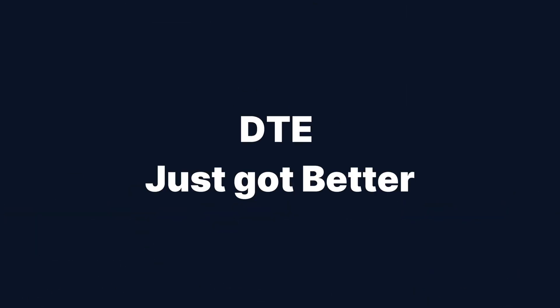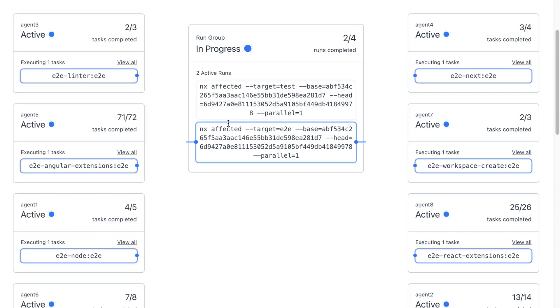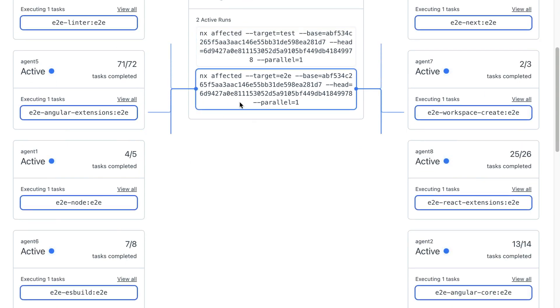We drastically improved our distributed task execution mechanism. Now you can follow along live as tasks are being run on various agents, and you can immediately spot failed tasks and address them without having to wait until the entire run completes. We also simplified the CI setup — you no longer have to provide CI provider-specific environment variables; we get that from the surrounding environment instead. DTE also got more performant: rather than sending tasks straight to agents, we first identify whether they've already been cached, avoiding unnecessary round trips.